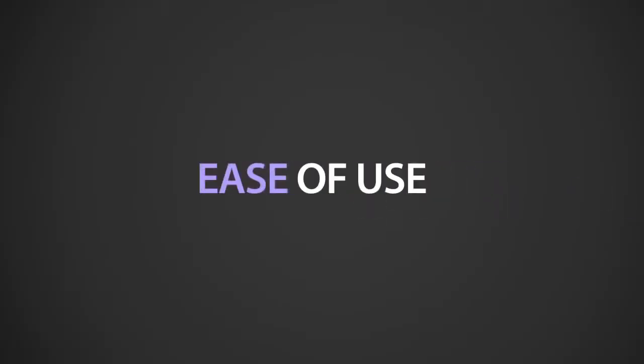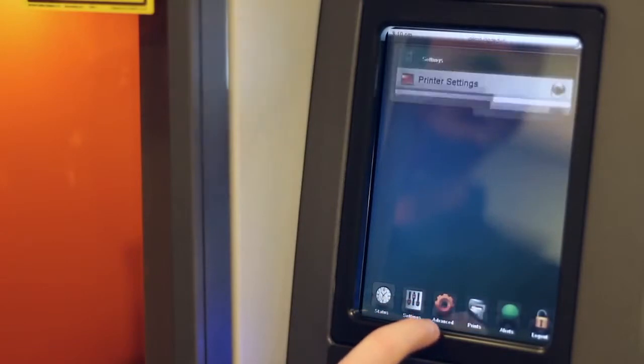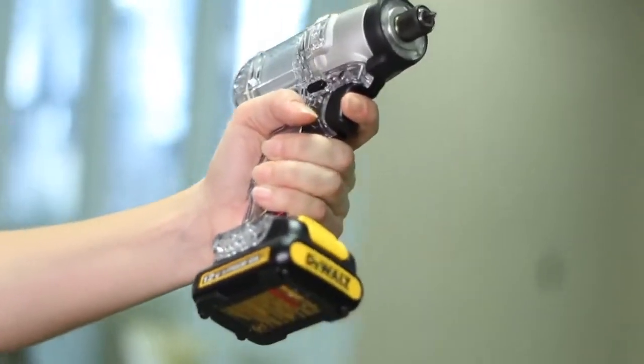With a convenient touchscreen interface and a simple top change material station, it's easy to print prototypes or functional parts and take advantage of the unparalleled material choices the 6000 and 7000 have to offer.